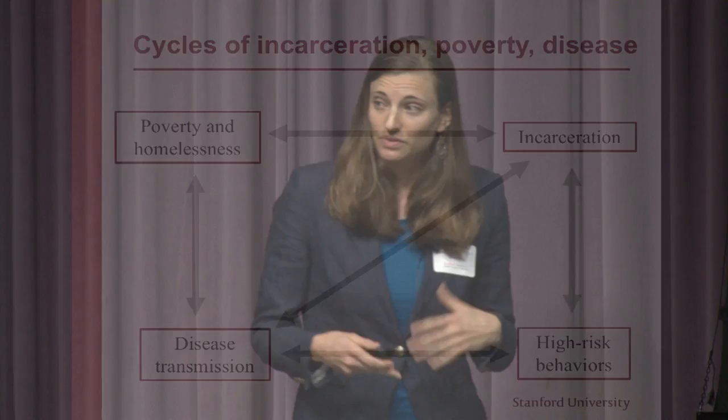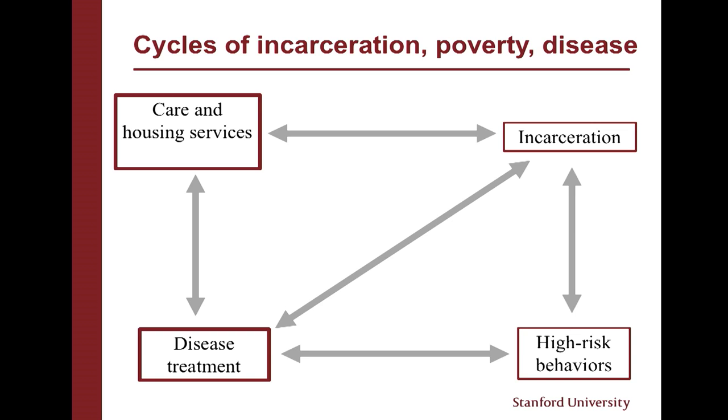We can think about ways to try to disrupt this system. What interventions could we consider? We could look at care and housing services, disease treatment — so maybe by virologically suppressing people they're less likely to transmit to others — behavioral interventions such as condom distribution or needle syringe exchange, and then actually looking at incarceration policy itself and trying to change that.